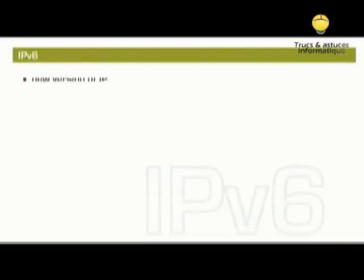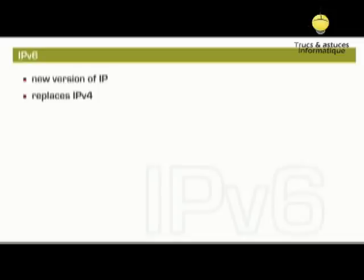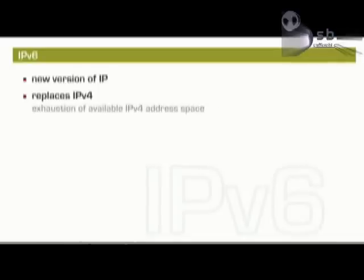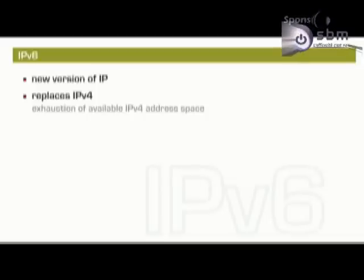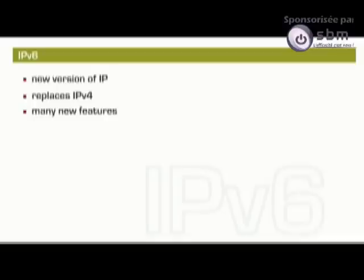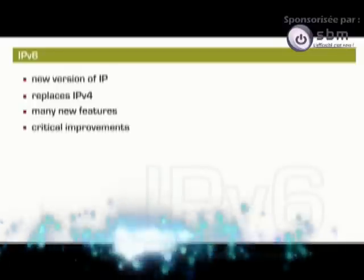IPv6, for short, is a new version of the Internet Protocol designed to replace IPv4, the Internet Protocol that is predominantly deployed and extensively used throughout the world. Although the exhaustion of available IPv4 address space has been the primary reason for the development of a new protocol, the designers of IPv6 have added many new features and a number of critical improvements to IPv4.